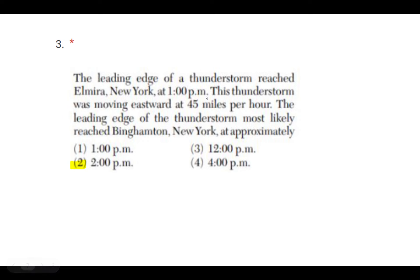Number three: the leading edge of a thunderstorm reached Elmira, New York at 1 p.m. This thunderstorm was moving eastward at 45 miles per hour. The leading edge of the thunderstorm most likely reached Binghamton, New York at approximately — the correct answer is 2, 2 p.m. This is new, but it's similar to what we've done in the past. I'm given the time for when the thunderstorm was in Elmira, and it's telling me that every hour the thunderstorm is moving 45 miles.